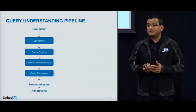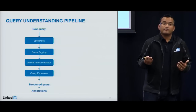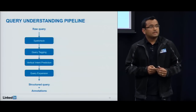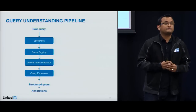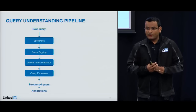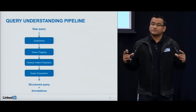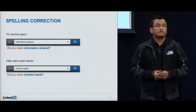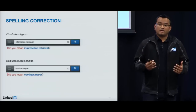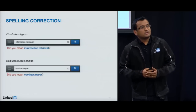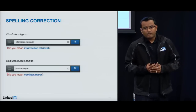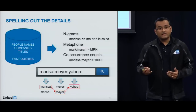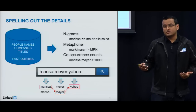The first component is spell check. The goal is obvious — we want to fix typos in the query — but more importantly, we also want to help you spell names, which are inherently harder because of the many variations or language differences. We start with a corpus of people names, companies, and titles from all the profile data we have about members, as well as past query logs. From that we extract three main features.